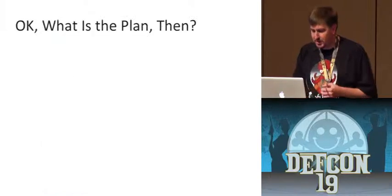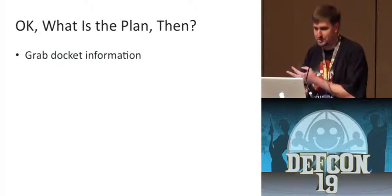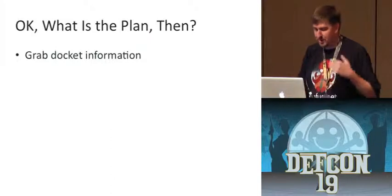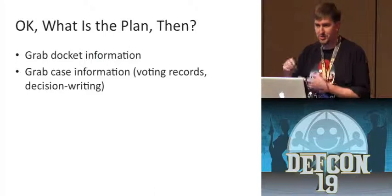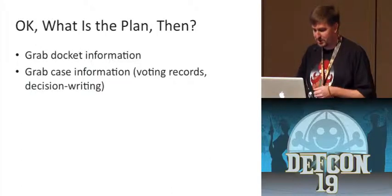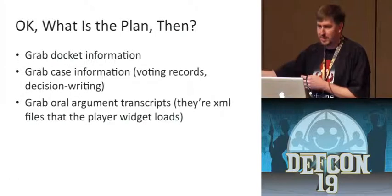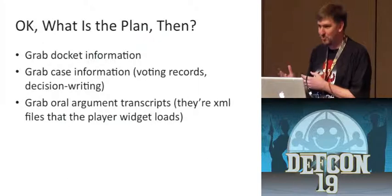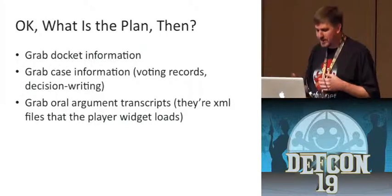My plan was to grab all of the docket information — the list of cases, who were the justices participating, and when they were heard — and then grab information about individual cases: how did each justice vote, did they write a decision, a majority opinion, a dissent, or a concurrence? It turns out if you watch what that Flash applet is doing through a proxy, it just pulls down an XML transcript of the oral argument, which is nicely annotated and well-suited to parsing by Perl. So you can grab the oral argument transcript as well.